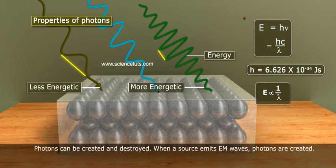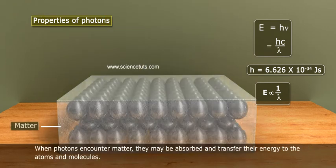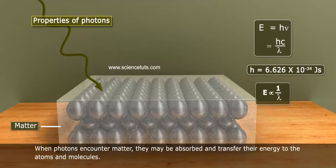Photons can be created and destroyed. When a source emits EM waves, photons are created. When photons encounter matter, they may be absorbed and transfer their energy to the atoms and molecules.